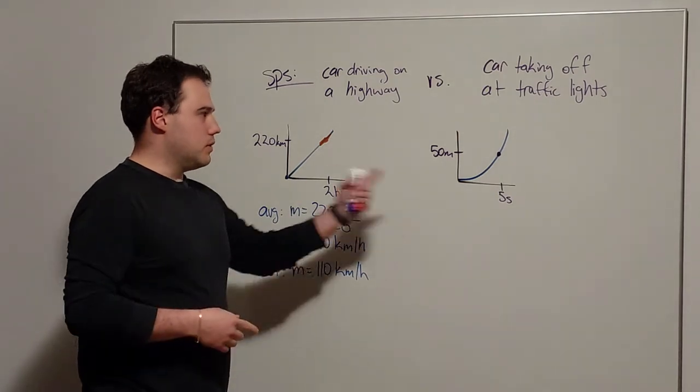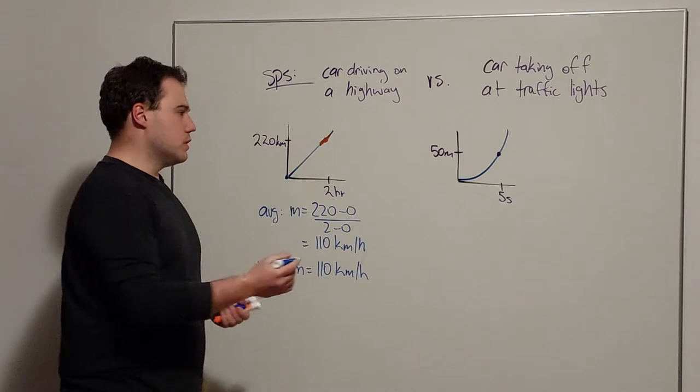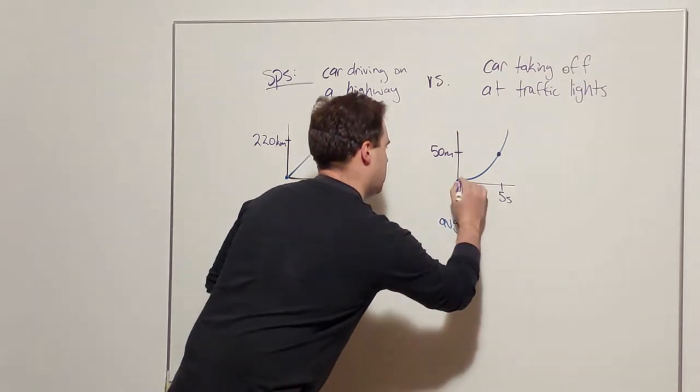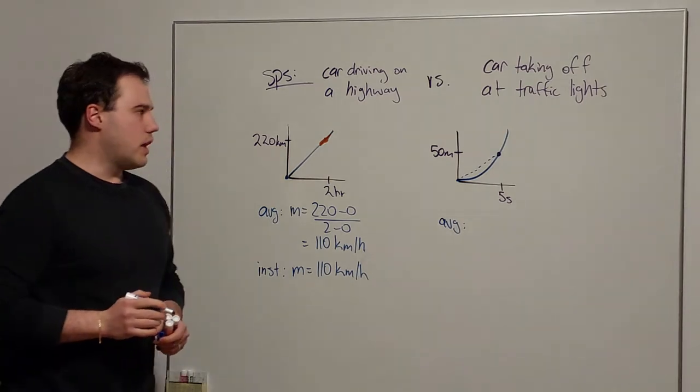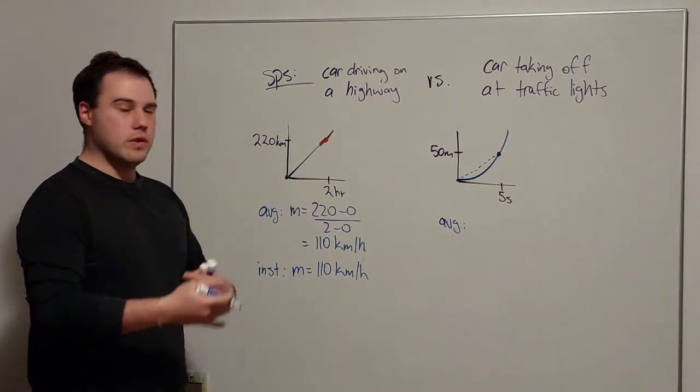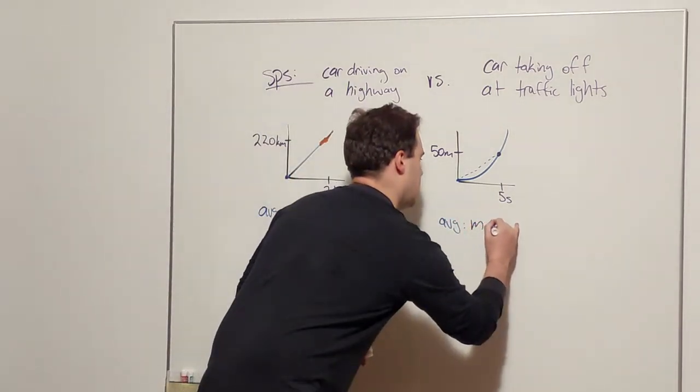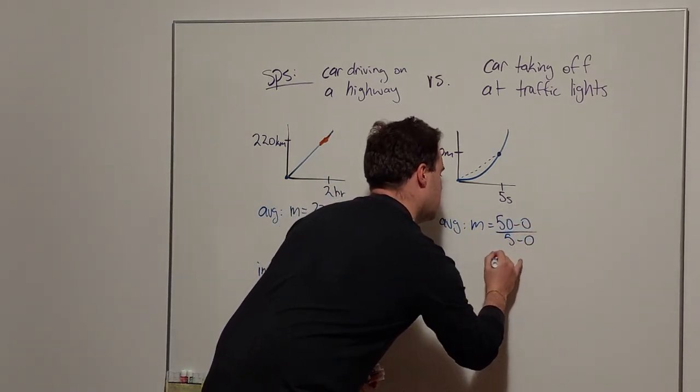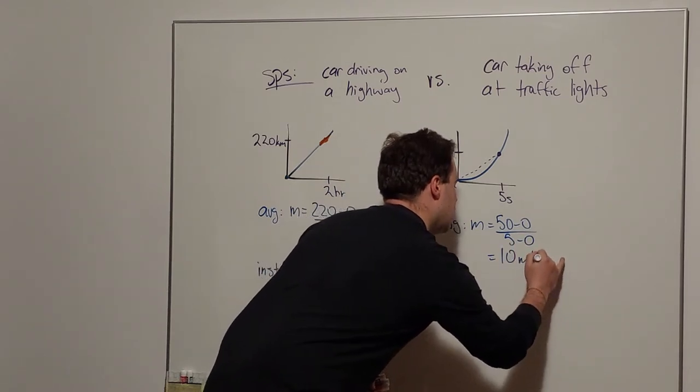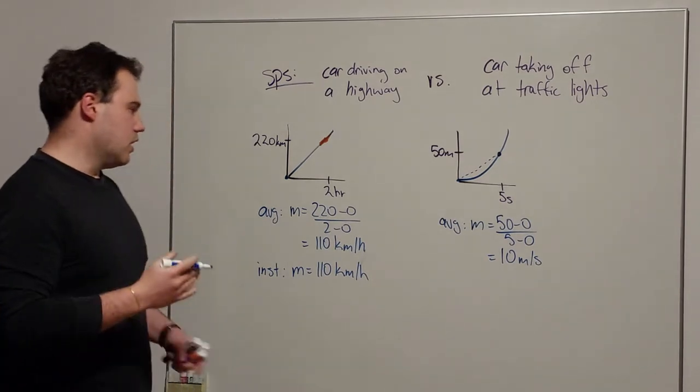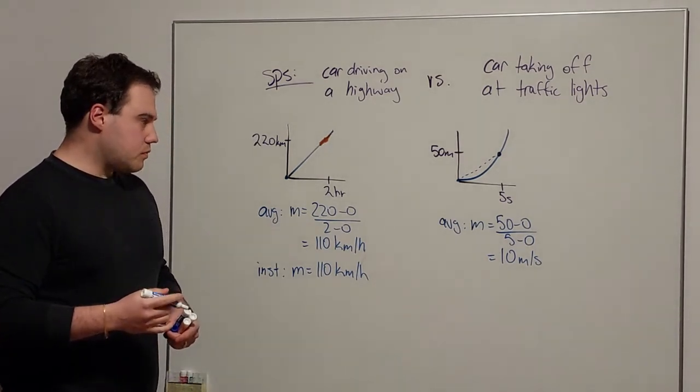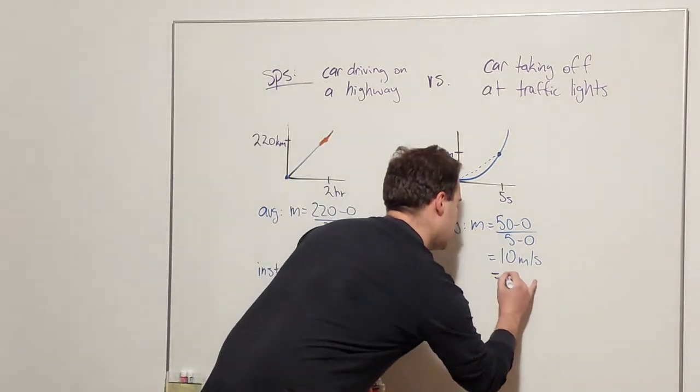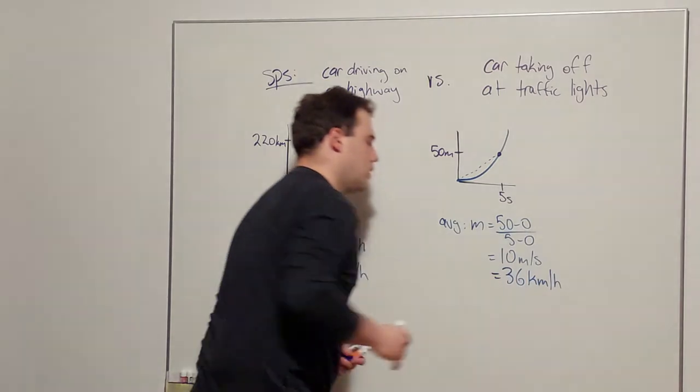Alright, let's try and do the same thing with our non-linear graph over here. So again we're starting at the origin and if we wanted to do the average, we would be looking at what's the gradient of the line between those two points, which would tell us the average speed over the first five seconds. So we'd have the rise over the run: 50 minus 0 over 5 minus 0, which is 10 meters per second. And just to kind of put into context, like maybe what's the speedometer reading in the car, if we times by 3.6 this would be 36 k's an hour.